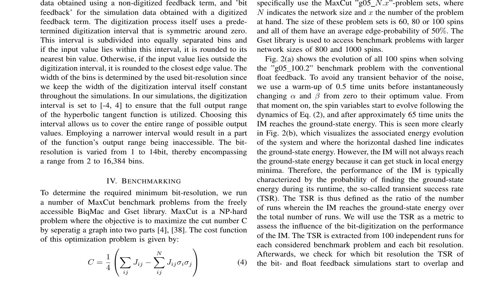The transient success rate (TSR) is defined as the ratio of runs reaching the ground state energy to the total number of runs. The authors extract the TSR from 100 independent runs for each benchmark problem and bit resolution. Figure 2C shows the TSR of the G05-100.2 BIC-MAC problem as a function of bit resolution, with average TSR values for float and bit feedback indicated by orange and black lines, respectively. The standard deviation is represented by the shaded areas around the average, allowing assessment of bit digitization's influence on performance.